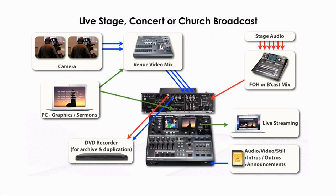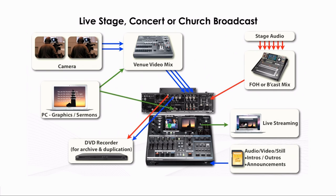The VR5 integrates well with a larger system in a live stage event, such as a concert or church service. The VR5 adds independent control over archiving and streaming to the web. Computer graphics and cameras are connected to a mixer for use in a live venue — in this case, a Roland LVS800. Additional media comes from an SD card for pre-event music or video, announcements, advertising, intros, and more.